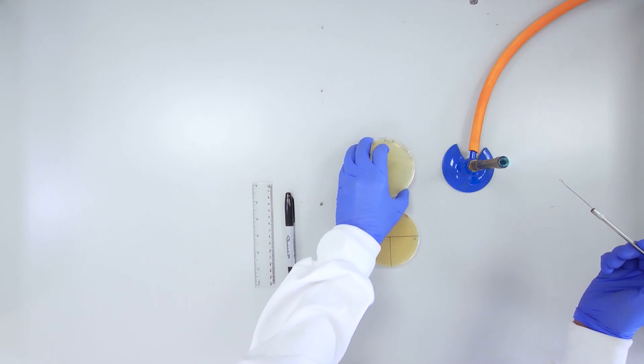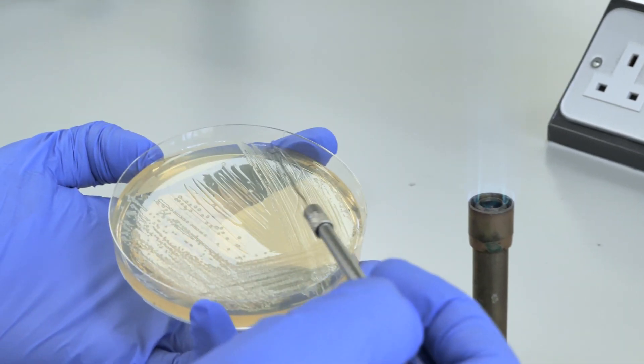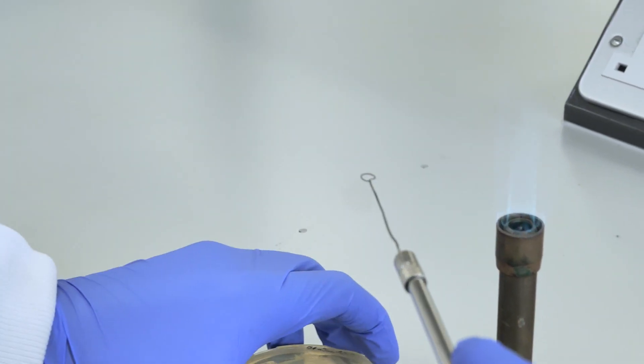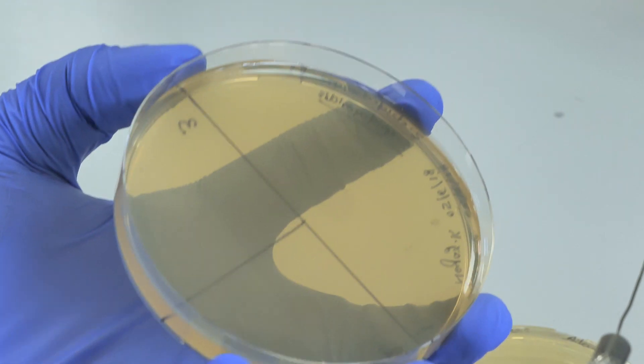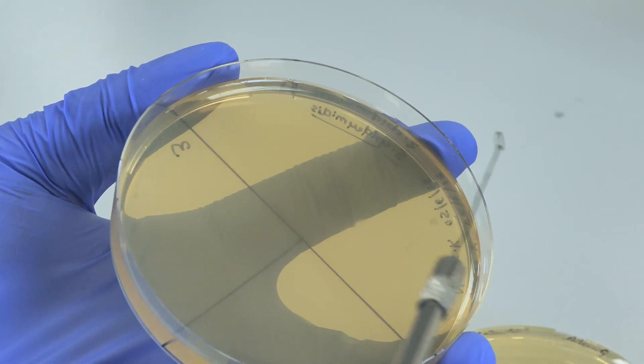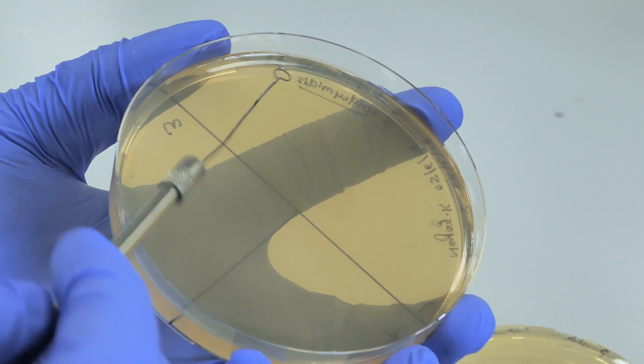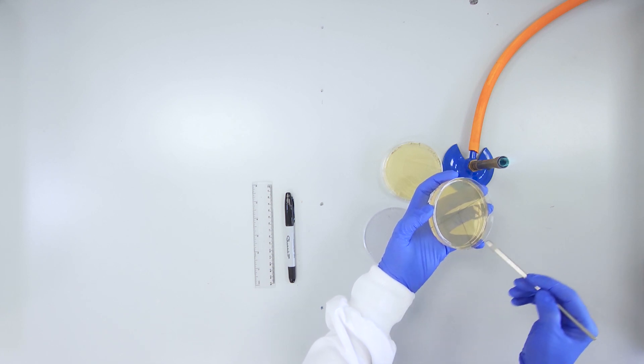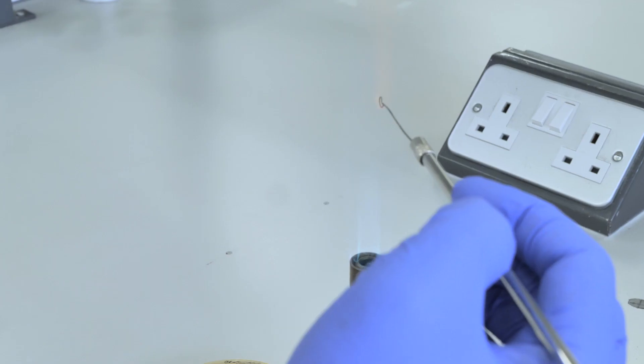Next, remove a single isolated colony from the pre-prepared E. coli plate using your now sterile loop. Streak this colony onto section 1 of your sterile TSA plate using a single continuous zigzag line. Note that the opened plate is held close to the flame and the lid is left in the updraft of the Bunsen burner.